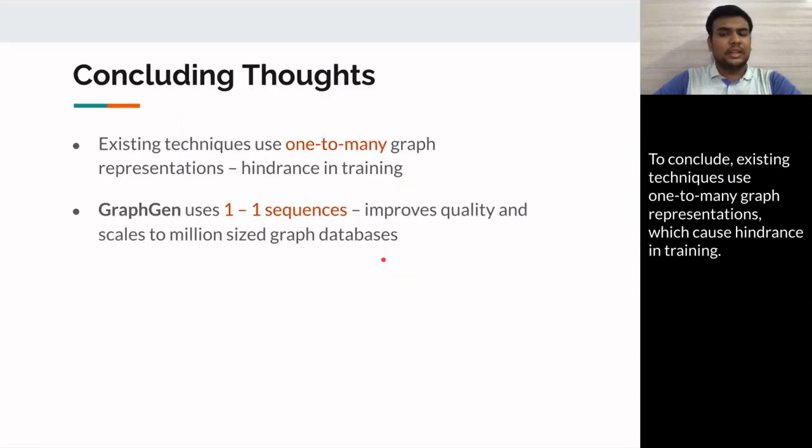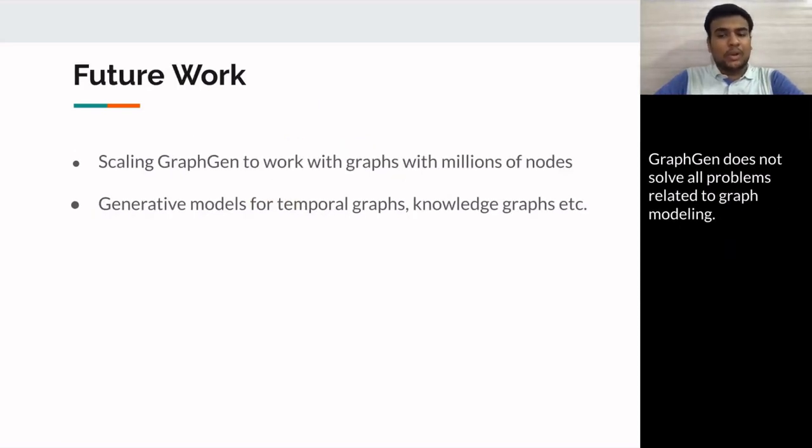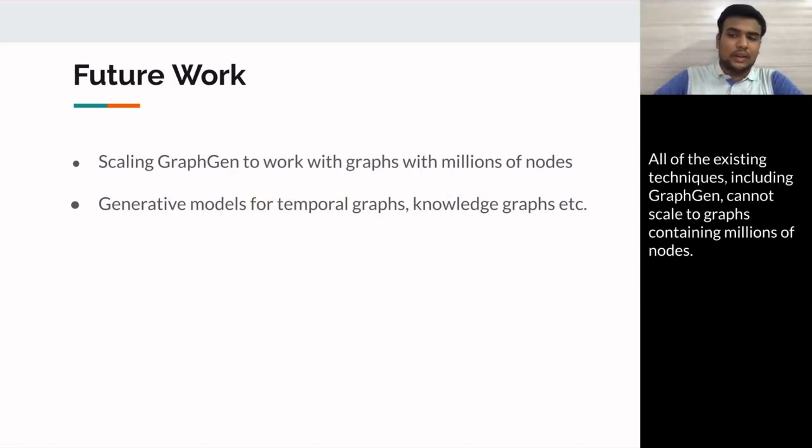To conclude, existing techniques use one-to-many graph representations which cause hindrance in training, whereas GraphGen uses one-to-one mapped sequences which improve quality and helps it scale to million-size graph databases. GraphGen does not solve all the problems related to graph modeling. All the existing techniques including GraphGen cannot scale to graphs containing millions of nodes.